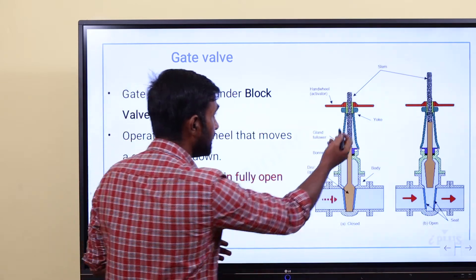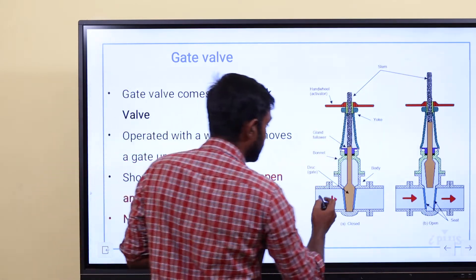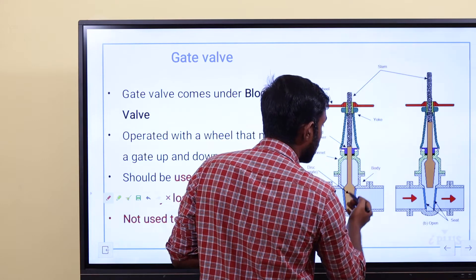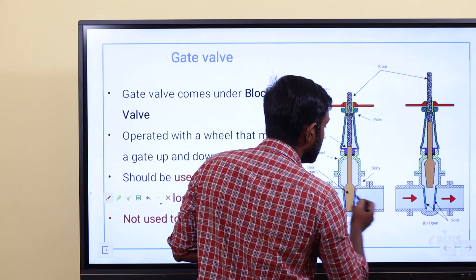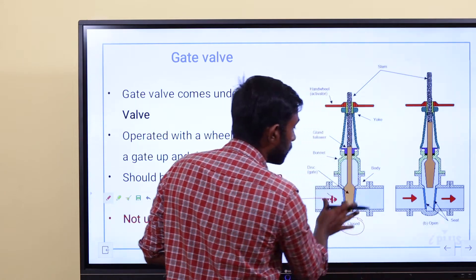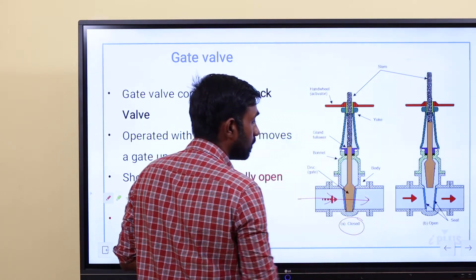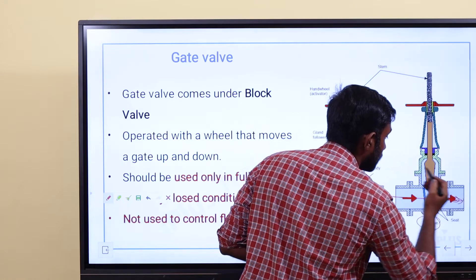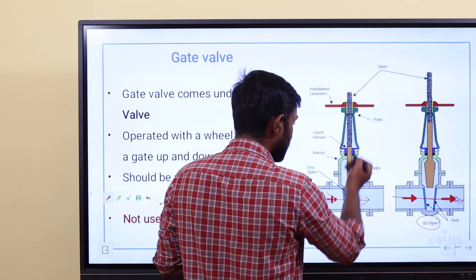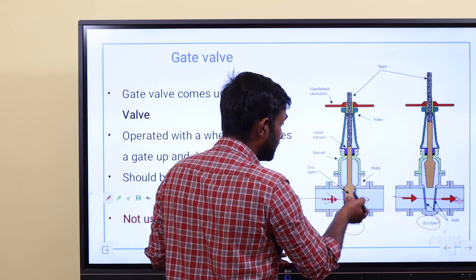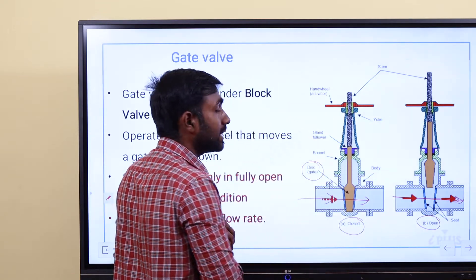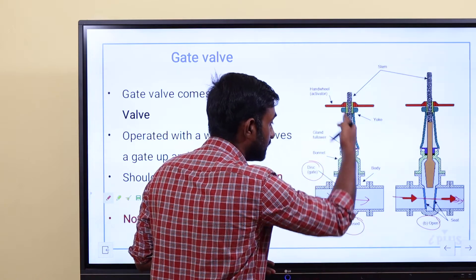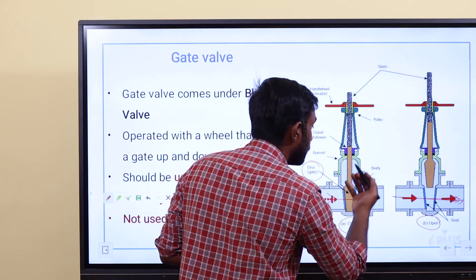There is a stem. This is the pipe inflow, this is the water inflow. This is the valve that we have to place here. This is the closed portion — water is not flowing. This is the open position — water is flowing. We have a disk or gate. It is fully open or fully closed.